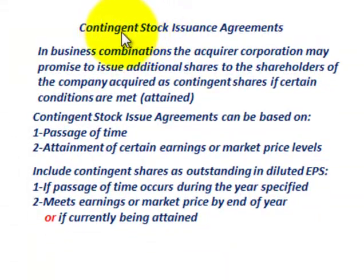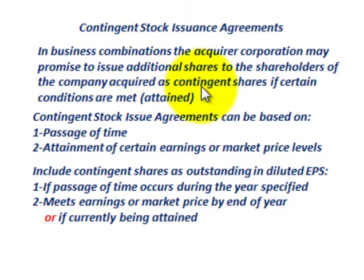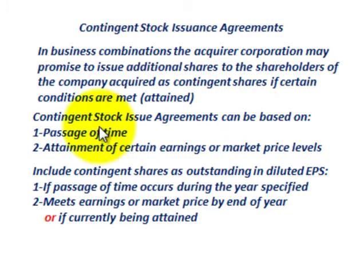Let's understand what those contingent stock issuance agreements are. In business combinations, the acquirer corporation — in this case Corporation A — may promise to issue additional shares to the shareholders of the company being acquired — in this case Corporation B — as contingent shares, if certain contingencies are met. Contingent stock issuance agreements can be based on either the passage of time or the attainment of certain earnings or market price levels.